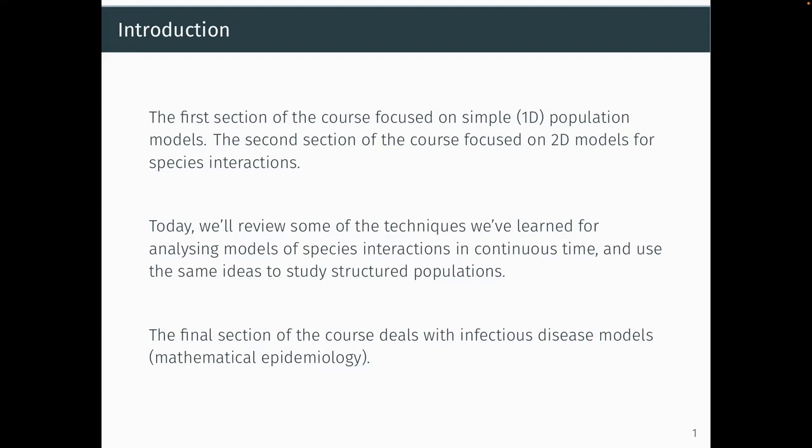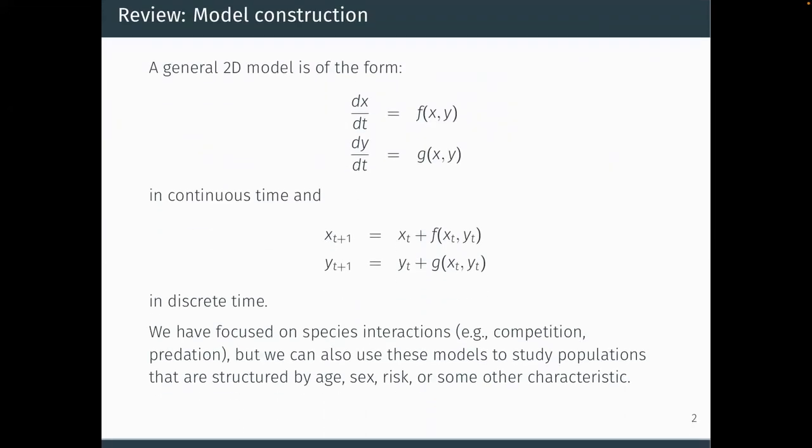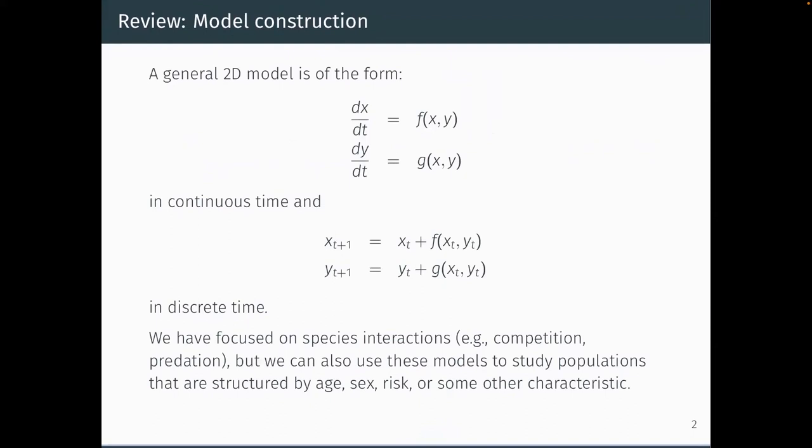Pretty much everything we've done for species interactions applies similarly when we have a single population with variation within it — variation by age, sex, genotype, or phenotype if we're thinking about evolution. Different characteristics in a population may affect things like growth rate, and we can use the same ideas about finding equilibria and stability to understand models of a single population with this heterogeneity.